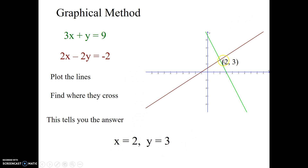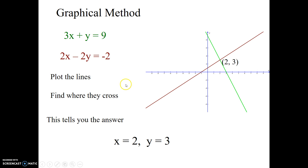That means the answer is x equals 2 and y equals 3. Use the coordinates of the intersection point to tell you the values of x and y. You should always go back and check: put 2 in for x and 3 in for y. Three times two plus three equals nine — correct. Two times two minus two times three gives four minus six, which is negative two — correct.